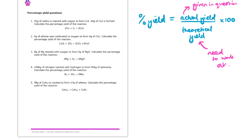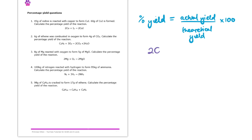So let's have a look here, starting with question one, at how we actually do these in practice. The balanced equation is very, very important, because it's that balanced equation that will enable us to see molar ratios of the substances. In this question, we are told about iodine — we're told a mass of iodine — and we're asked about copper iodide. Those are the two substances that we're given numbers or asked numbers about.